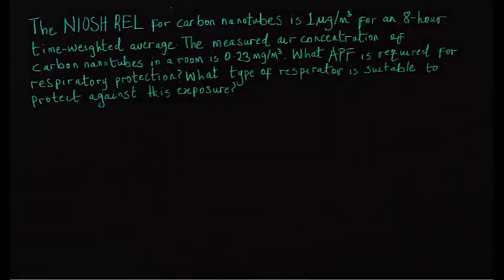In Scenario 3, the NIOSH REL for carbon nanotubes is 1 microgram per cubic meter for an 8-hour time-weighted average. The measured air concentration of carbon nanotubes in a room is 0.23 milligram per cubic meter. What APF is required for respiratory protection? What type of respirator is suitable to protect against this exposure?